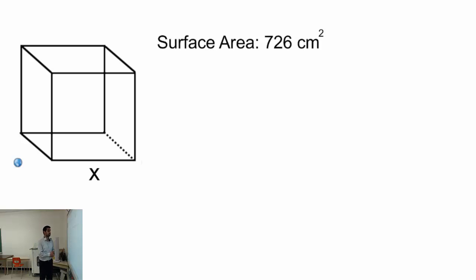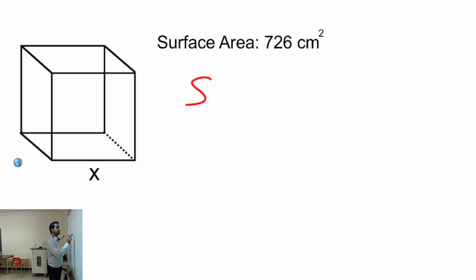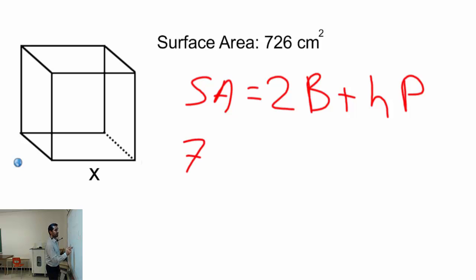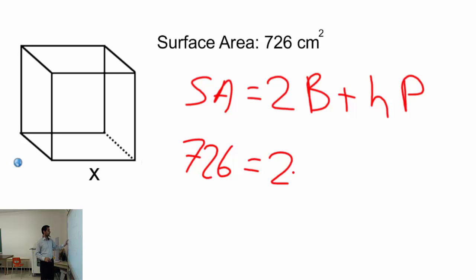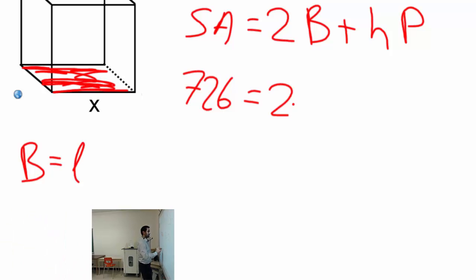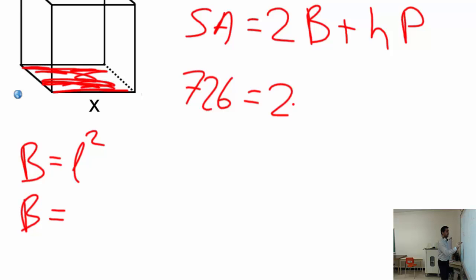Now let's do another example where this time the surface area is given to us instead of volume. I'll write down the surface area formula: surface area equals 2 times capital B plus height times the perimeter of the base. The surface area given is 726.